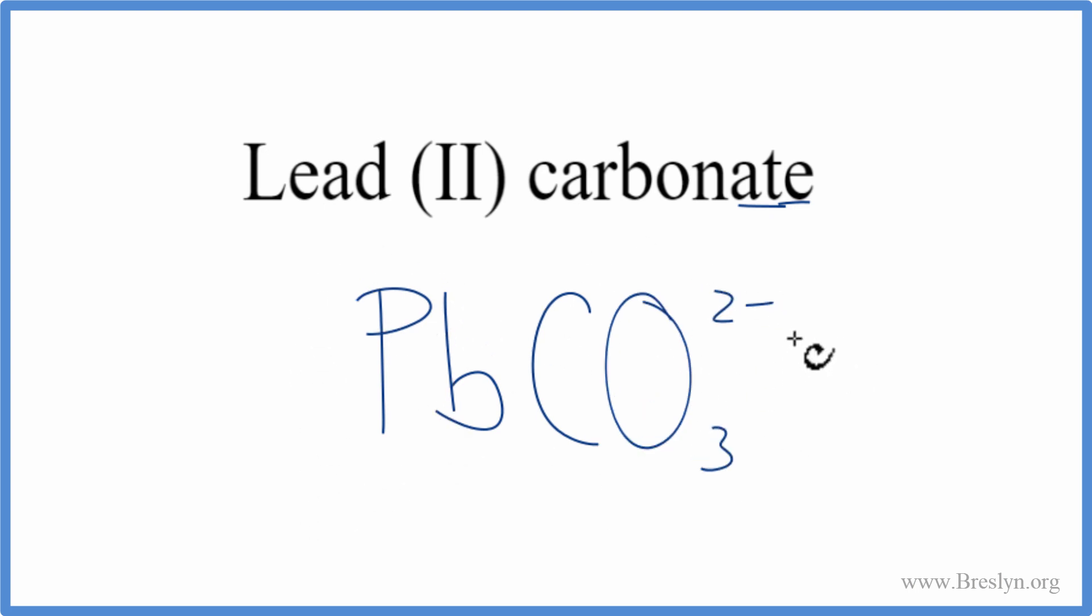We have our lead and our carbonate. Lead, that's a metal, and then the carbonate, that's a group of nonmetals. So this is an ionic compound, and we need to think about the charges on the lead, and then we have the carbonate here with its 2- charge.